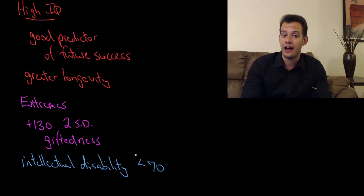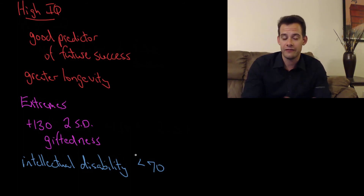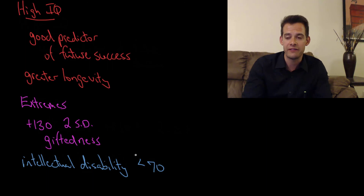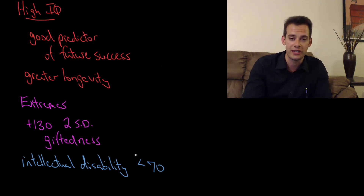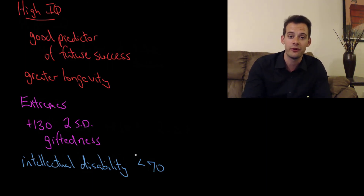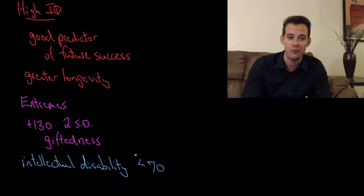That's an overall summary of variation in IQ scores — how people differ and the distribution of IQ scores in the population. Please like the video and subscribe to the channel for more. Thanks for watching.